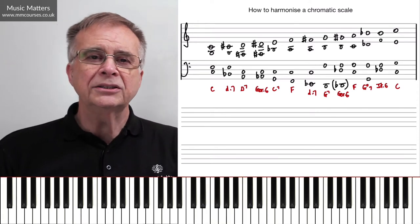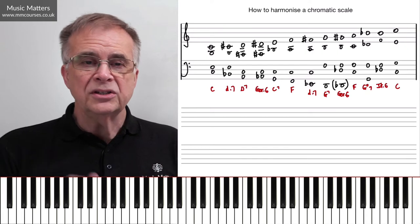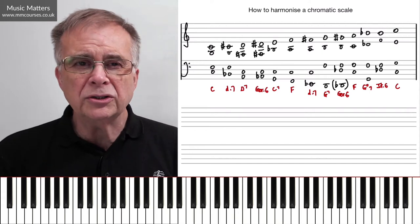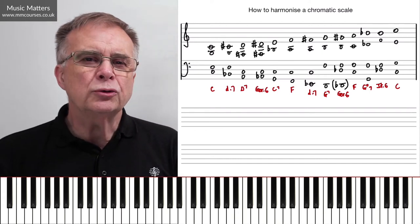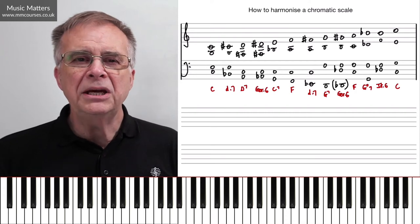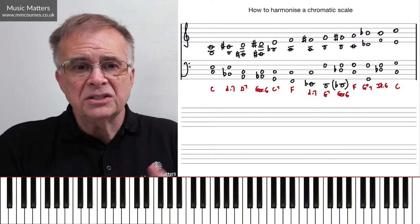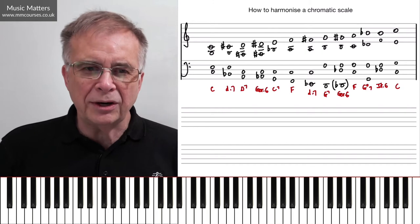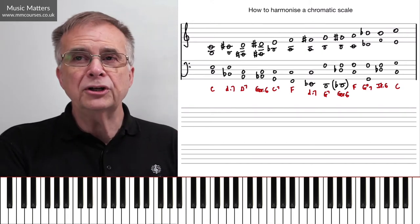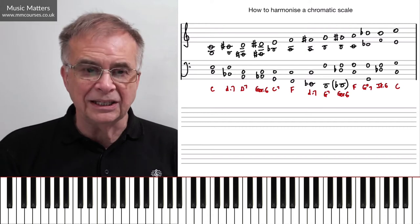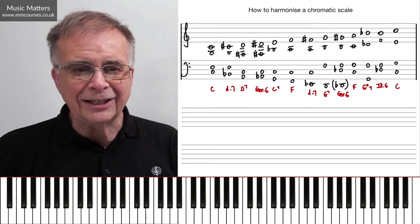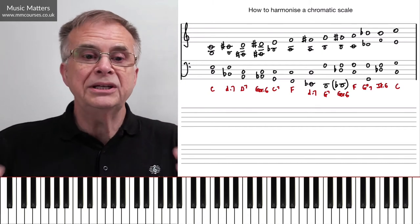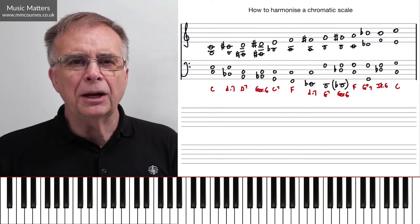In other words, you can use the diatonic chords within the scale, and as long as the melody note fits the chord that you've chosen, you can't go too far wrong. So when you harmonize a chromatic scale, life is immediately more complicated, because which key are you in? Chords always have a kind of key reference to them, don't they? You have a function, because you're going from five to one or something.